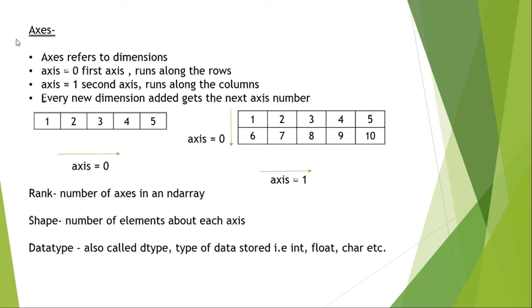Data type, also called dtype, refers to the type of data stored - integer type, float type, char, etc. Item size depends upon the data type. If the data type is int, it will have the item size according to int. If it is float, it will have the data type size according to float.